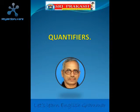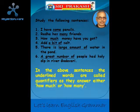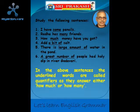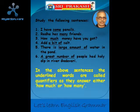In today's Let Us Learn English Grammar series, let us learn about quantifiers. Study the following sentences: I have some pencils. Radha has many friends. How much money have you got? Add a bit of salt. There is a large amount of water in the pond. A great number of people had a holy dip in river Godavari. In the above sentences, the underlined words are called quantifiers as they answer either how much or how many.